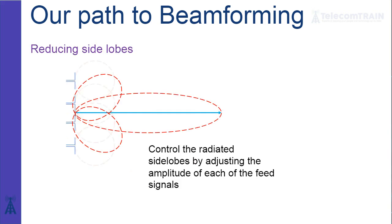One additional important concept: when feeding signals into array elements, there are side lobes — radiated power in directions you don't want. If you adjust the amplitude of each feed signal, you can start reducing the side lobes of your antenna. So: controlling phase lets you direct the beam, and controlling amplitude lets you reduce side lobes. This is amazing how it all works together.